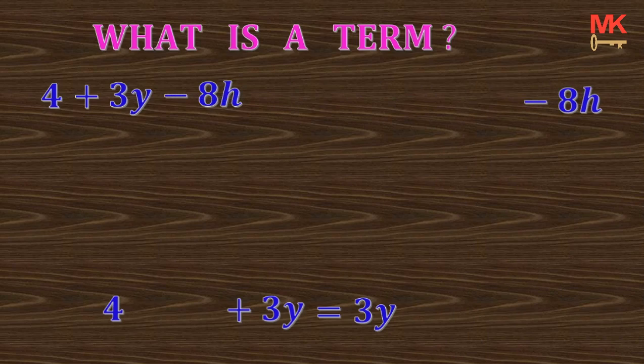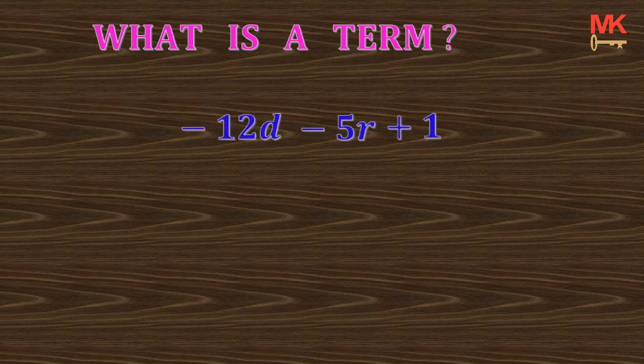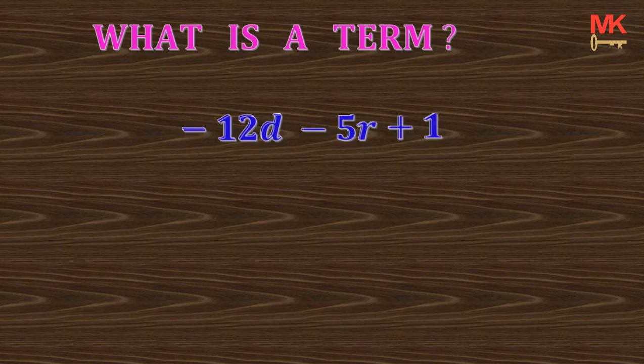So if you look at this, these are the 3 basic terms that form this expression. Here is another example: negative 12b take away 5r plus 1. This expression is also made up of 3 terms. The negative 12b, the negative 5r, and the positive 1.